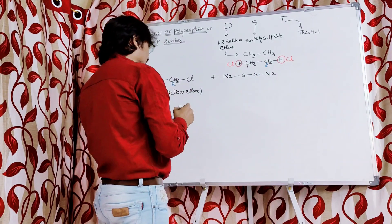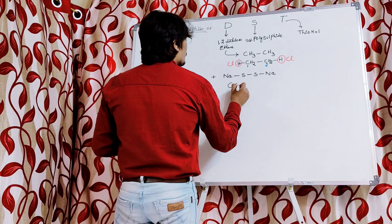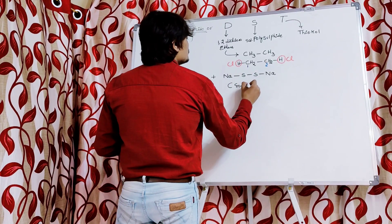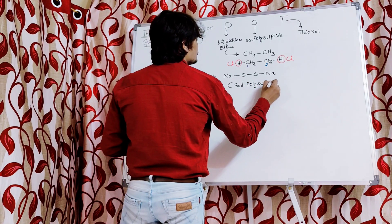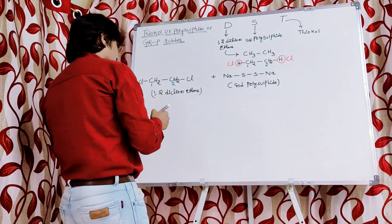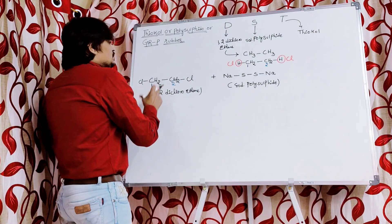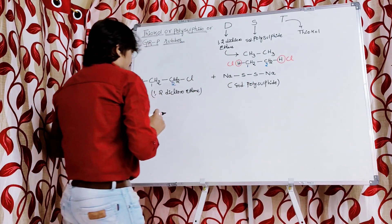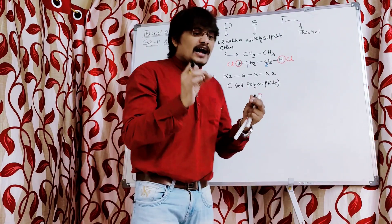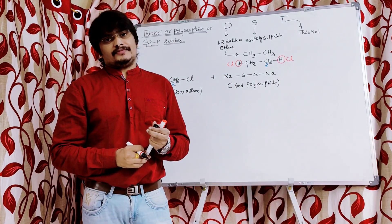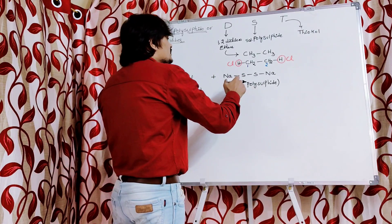The second monomer is sodium polysulfide, also called sodium disulfide. Now, in 1,2-dichloroethane and sodium polysulfide there are leaving groups — that is, functional groups linked to them. Chlorine is the functional group linked to 1,2-dichloroethane, and sodium is linked to the sodium polysulfide.